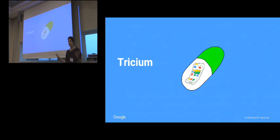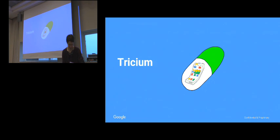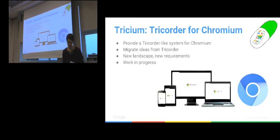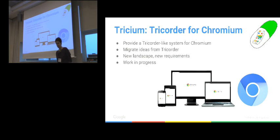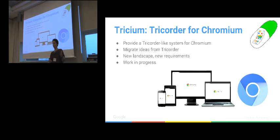The thing I really wanted to get to is Trisium. We had Tricoder and ShipShape, and Trisium is what I'm currently working on. I switched teams — I used to work on Tricoder and now I'm working on Chromium. So I was thinking: how can we bring Tricoder to Chromium?